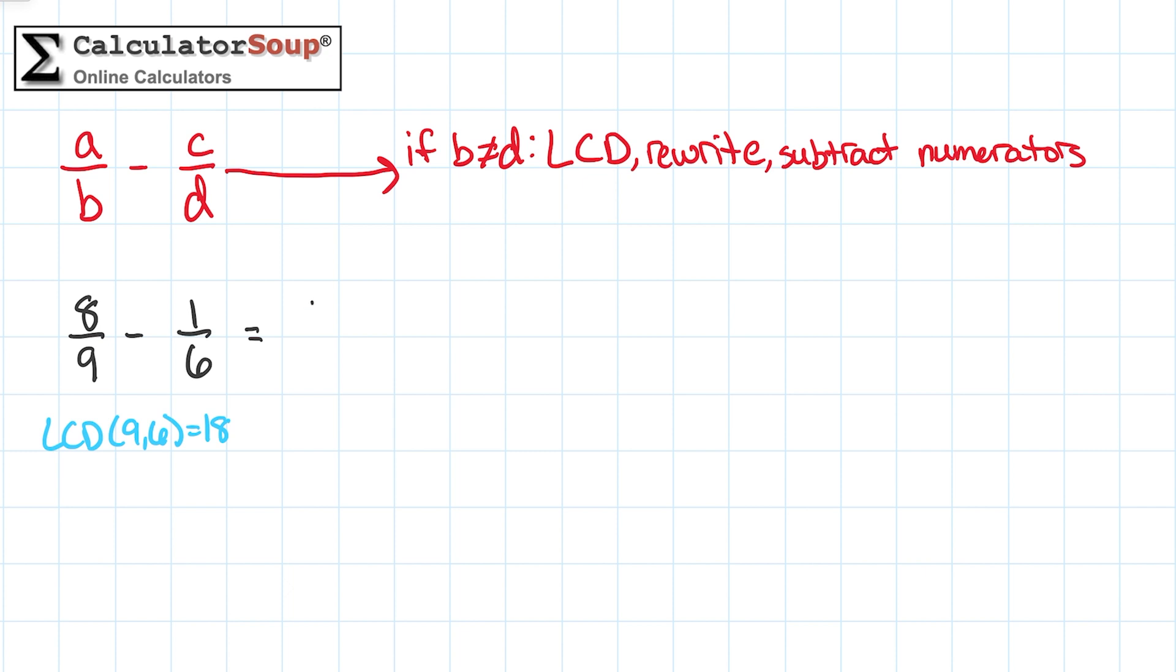For the first fraction, we will multiply both the numerator and denominator by 2. To find the equivalent fraction of 1 sixth, multiply the numerator and denominator by 3.